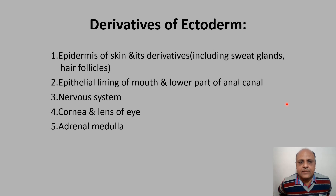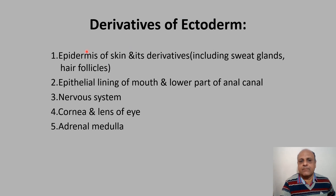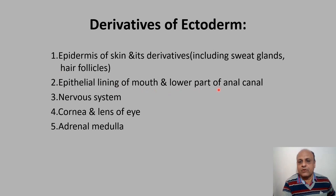There are five derivatives of ectoderm. The first two start with 'E': epidermis of skin and its derivatives including sweat glands and hair follicles, and epithelial lining of the mouth and lower part of the anal canal. Since ectoderm is the outer layer, it naturally forms epidermis. The third derivative is the entire nervous system, which is derived from ectoderm.